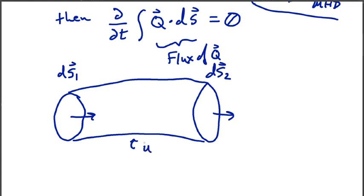The length of this cylinder is u times dt, because we've gone some distance given by the velocity of our flow. I need to consider one more differential in our system: the length element dl around the perimeter of our surface. We'll need that when doing an integral around our surfaces. So we have dl pointing in one direction and our length u·dt going down the cylinder.